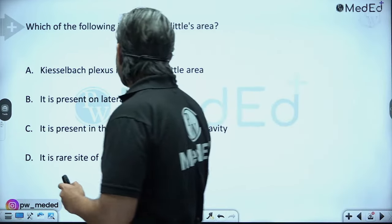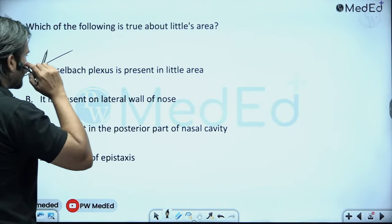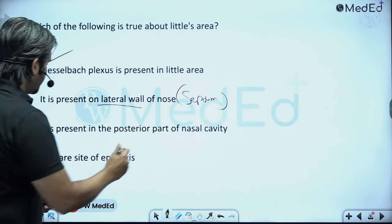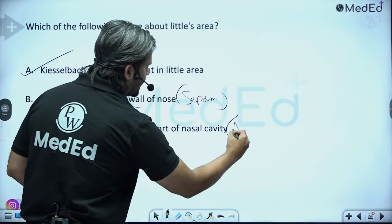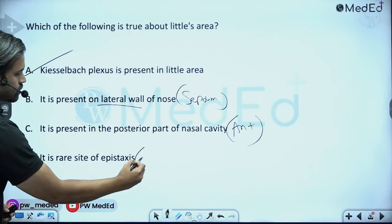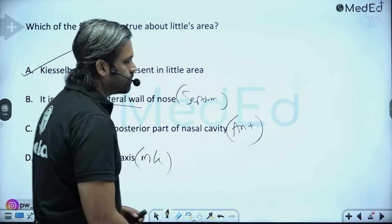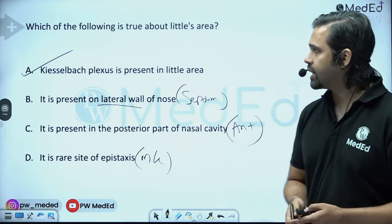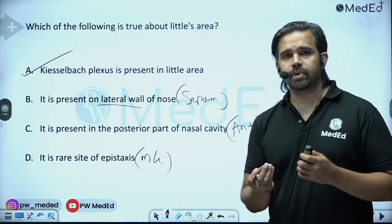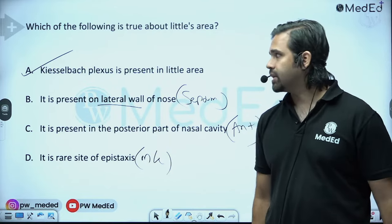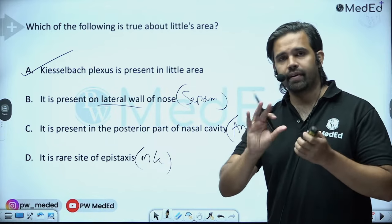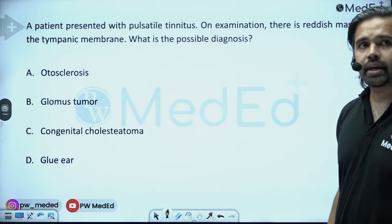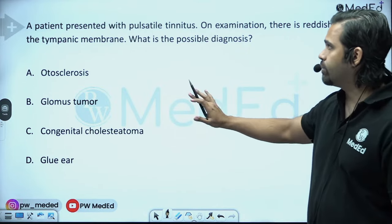Little's area: Kiesselbach's plexus is present in Little's area, not on the lateral wall of the nose — it is on the anterior septum. It is the most common site for epistaxis, not rare. This is a straightforward question but examiners sometimes use simple questions for confidence — while two or three questions per set are the deciding factors. The answer is A.